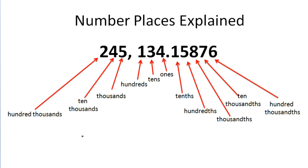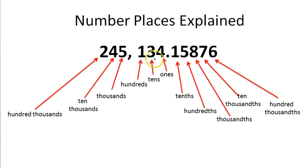So take a look at this number here. We've got 245,134.15876. If we start right here at the 4, the 4 here is occupying the 1's position, or the 1's place. Next door here, the 3 is occupying the 10's place.